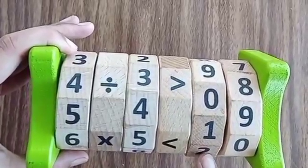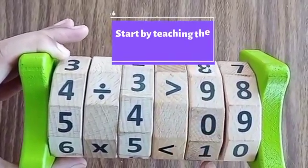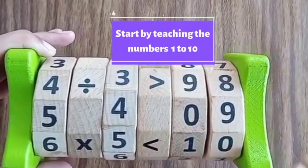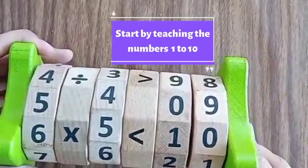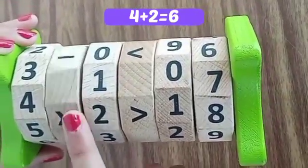So first, introduce the math wheel. Show it to the children and explain it. Start by teaching the numbers 1, 2, 3 to 10. Use the math wheel to show the children the numbers and count them together.